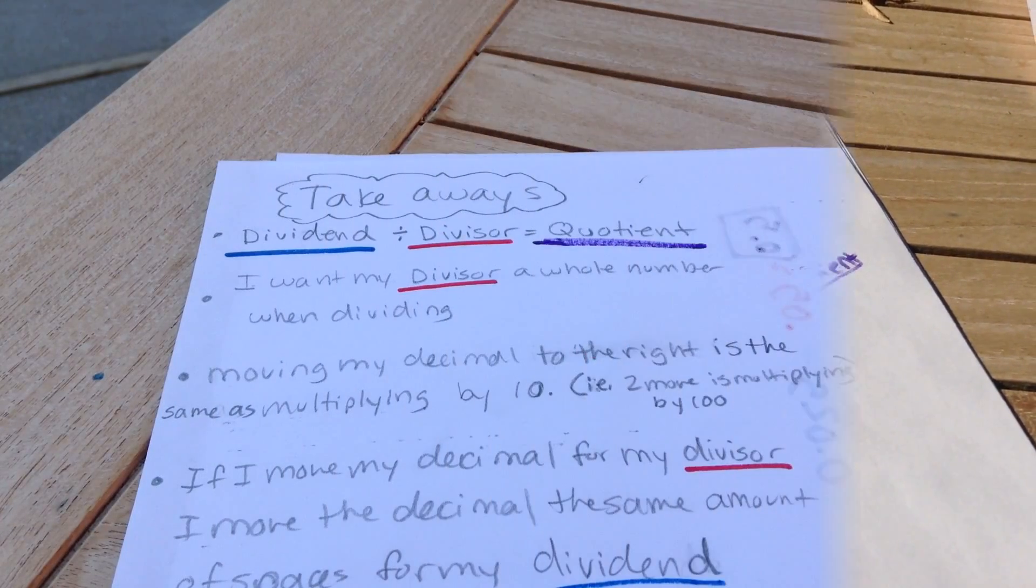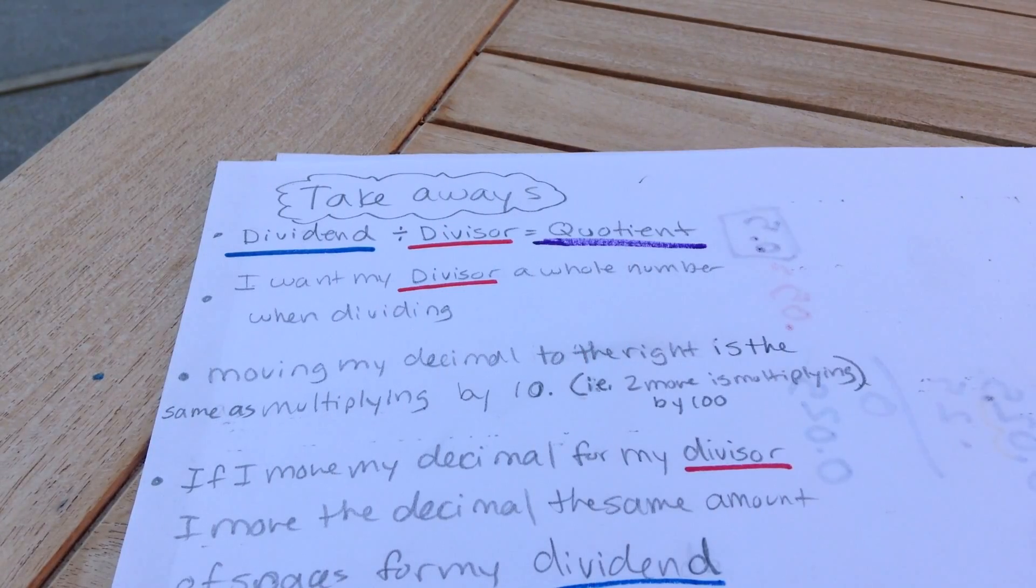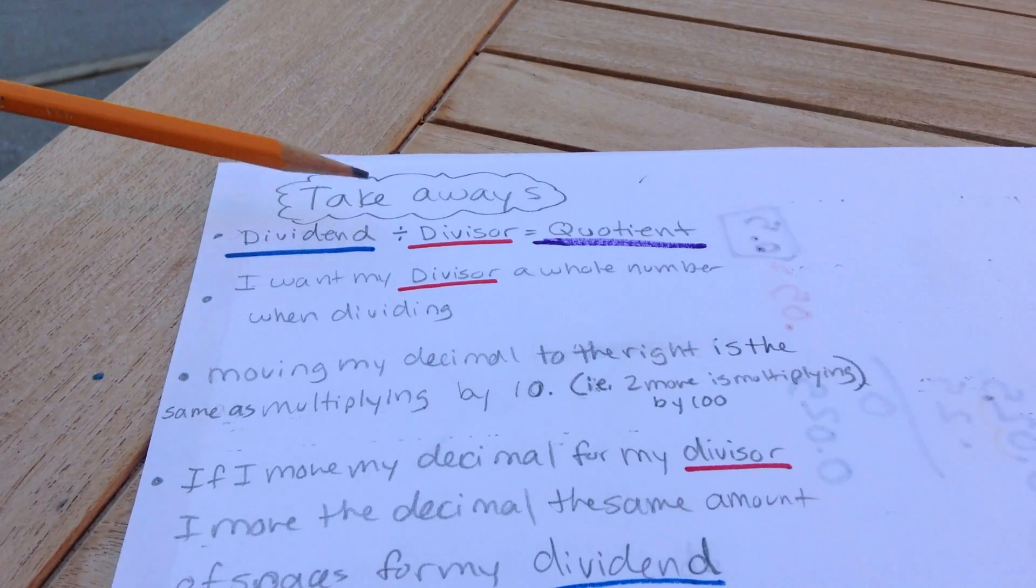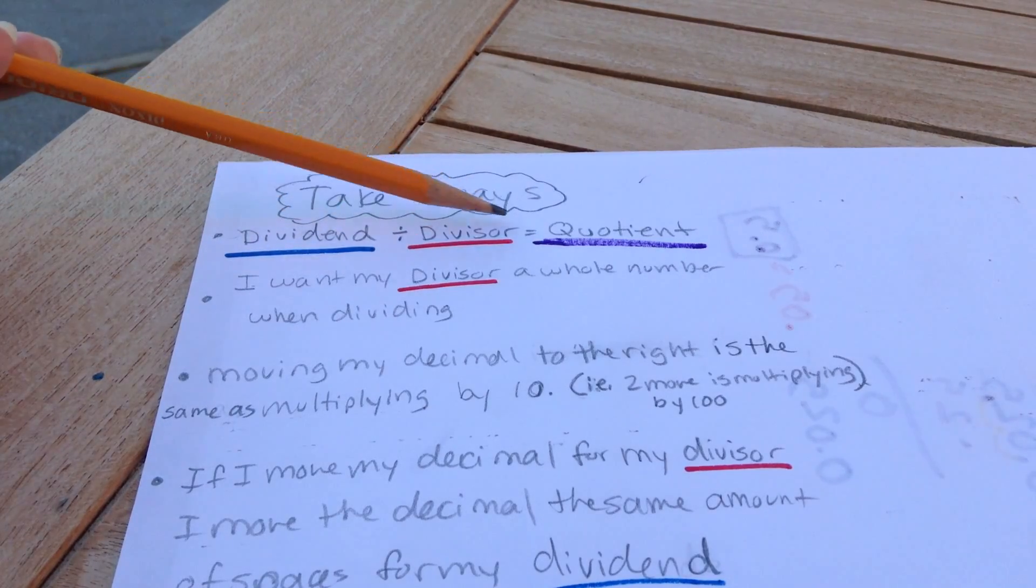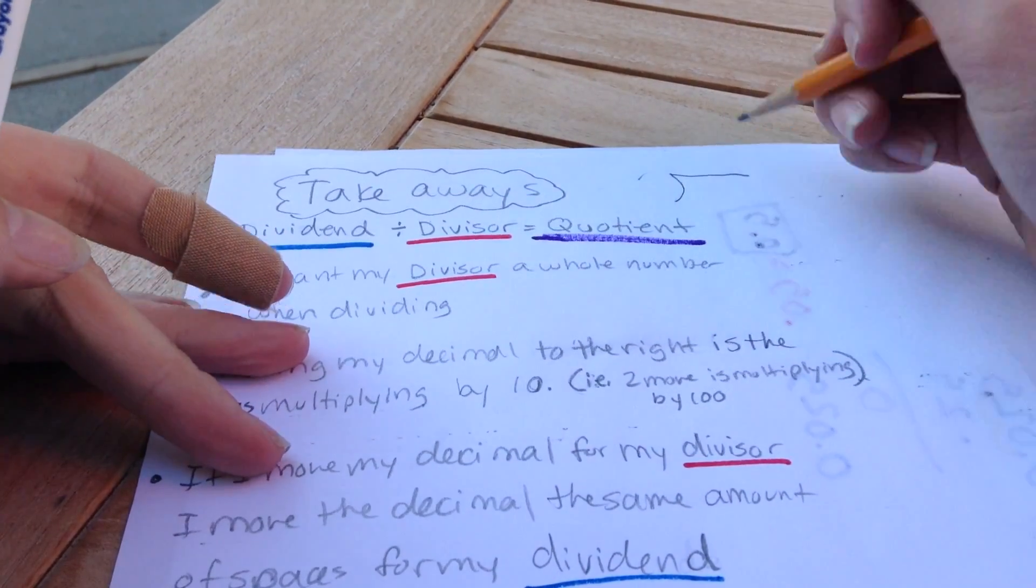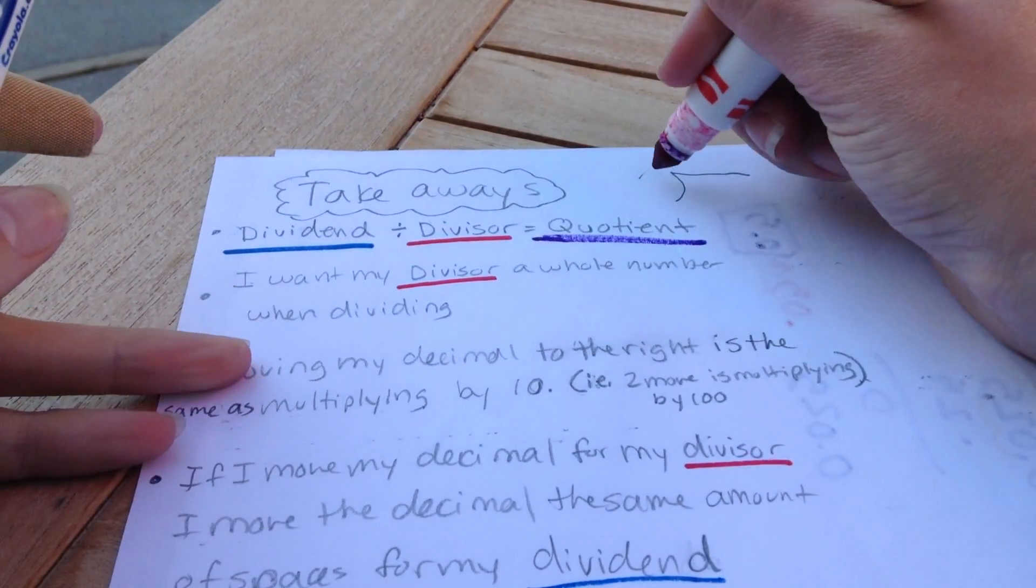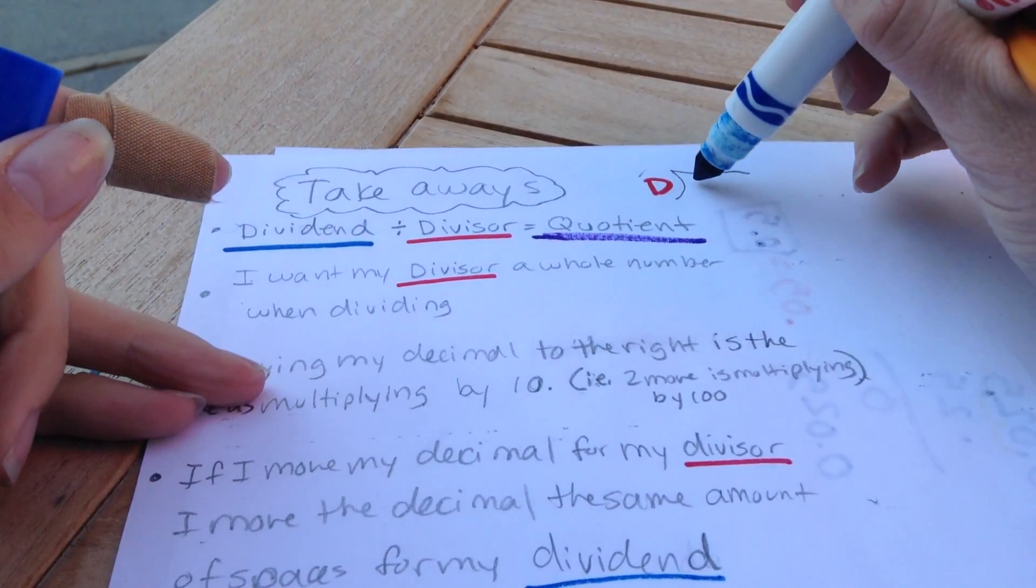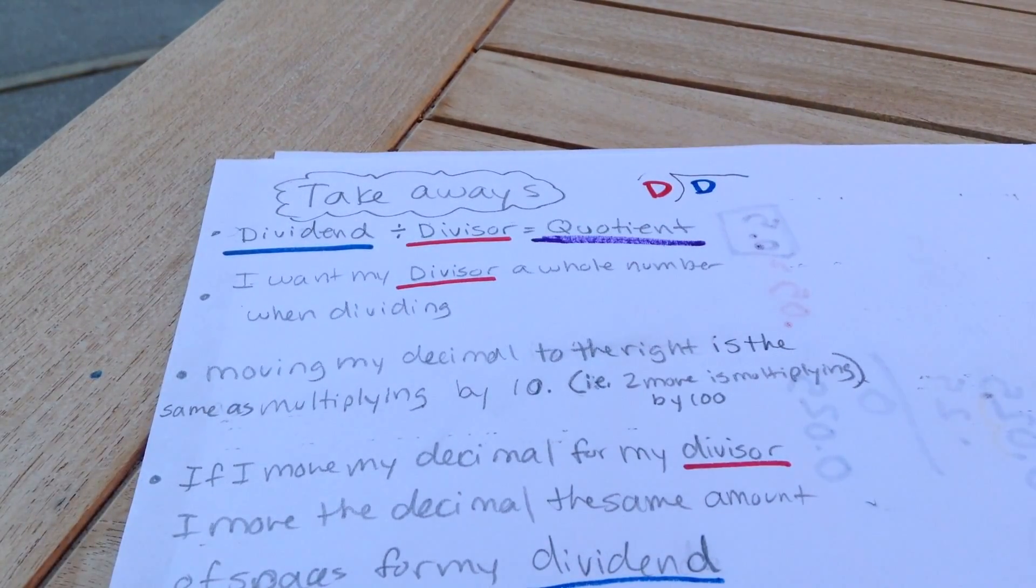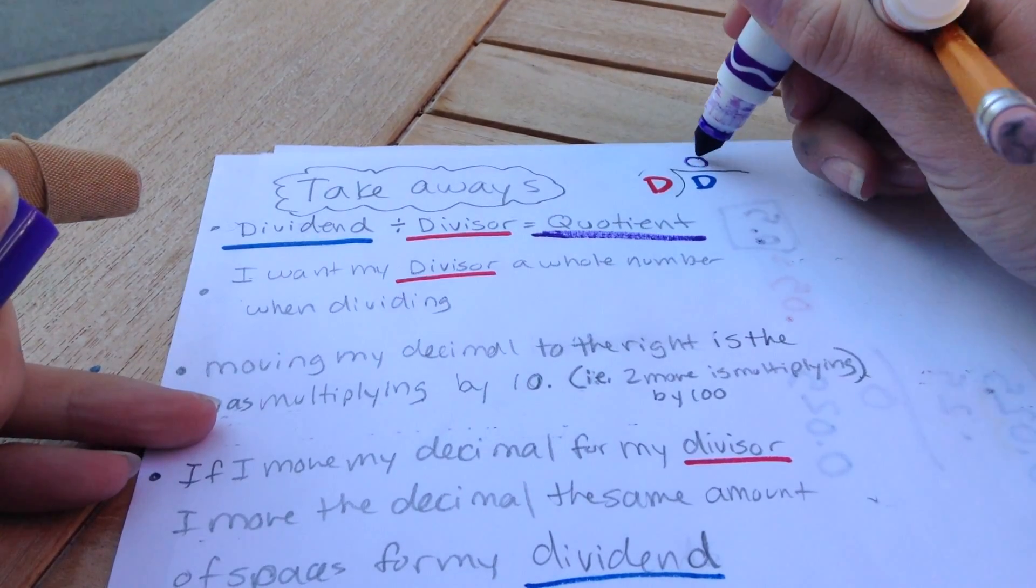Hey guys, so let's wrap up the video real quick. I have some takeaways that I would like you to put in your notes. The first takeaway is the idea that when I am looking at a division problem, it is my dividend divided by my divisor is equal to my quotient, and I remember that for long division that also is showing me that my divisor is on the outside, my dividend is on the inside, and my quotient is my answer on the top.